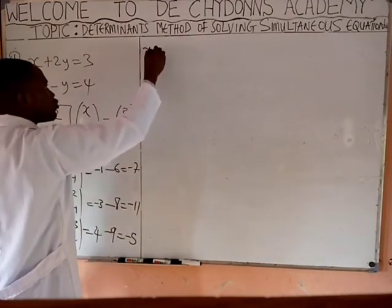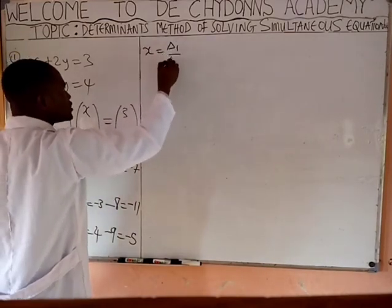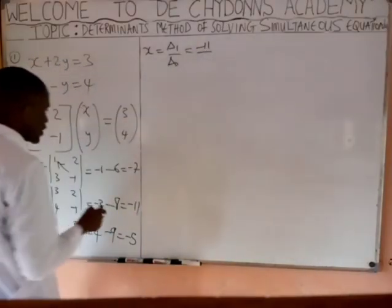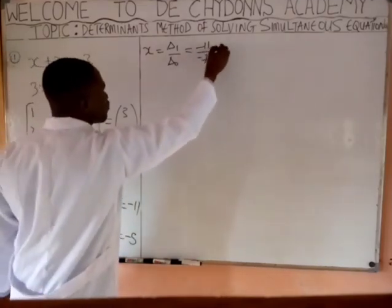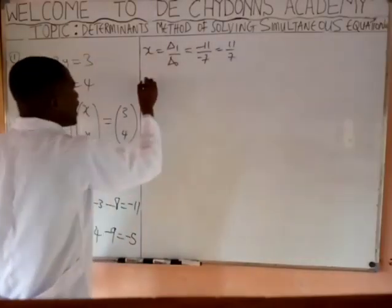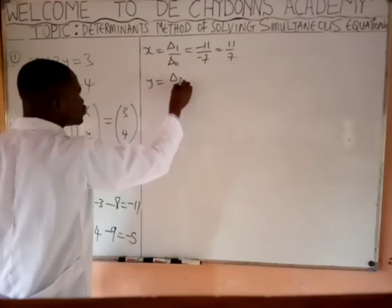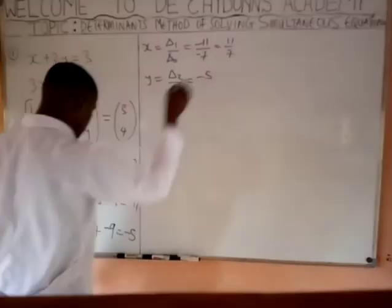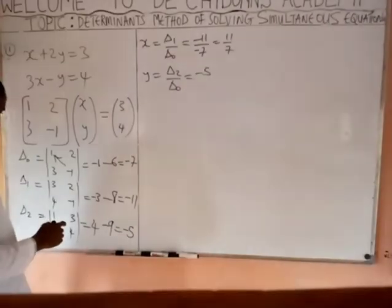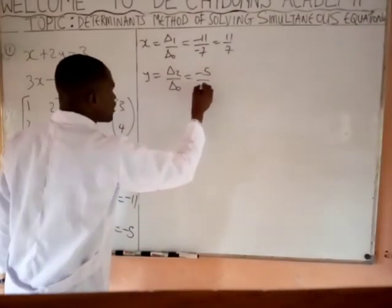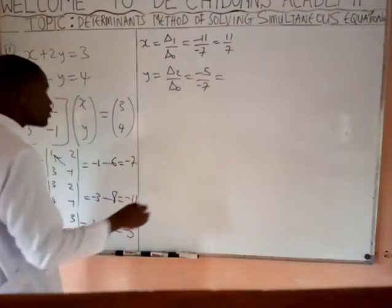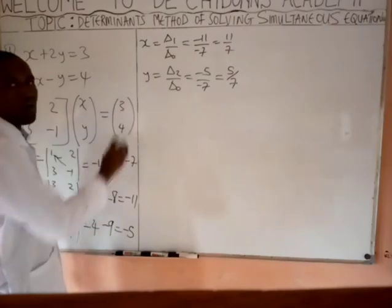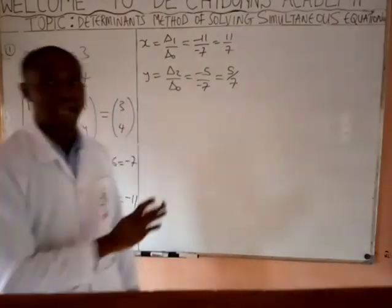Therefore, x will be equal to Delta 1 over Delta 0. Delta 1 is minus 11, Delta 0 is minus 7, which equals 11 over 7. And y equals Delta 2 over Delta 0. Delta 2 is minus 5, Delta 0 is minus 7, which equals 5 over 7. Those are the values of x and y.